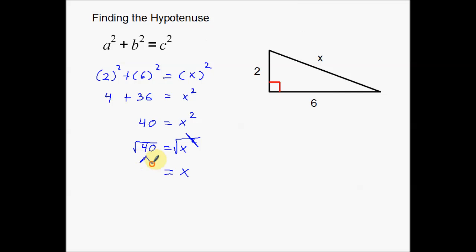I want to make the square root of 40 smaller by splitting it up — this is kind of like factor trees. We know 8 times 5 equals 40, so I could split it into the square root of 8 times the square root of 5. But the problem is we don't know what the square root of 8 is, and we don't know what the square root of 5 is, so splitting it that way is pretty useless.